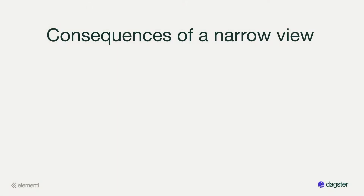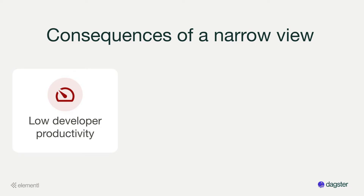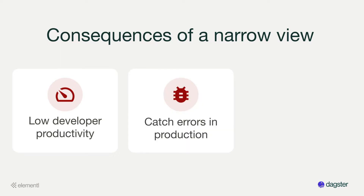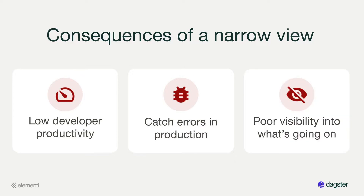Taking this narrow view has some material consequences. First, it results in low developer productivity — iteration cycles are slow when pipelines can only execute in production, and it's cumbersome to translate a pipeline of data assets into scheduled workflows of tasks. Second, it results in poor reliability, because if you can't catch errors before your changes make it to production, you'll catch them in production. And third, it makes it hard to understand what's going on when a pipeline is deployed, because it mainly gives you visibility into what tasks have run, not what data assets have updated.